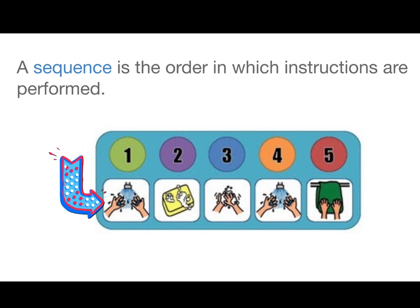This picture shows the sequence we use when we're washing our hands. First, turn the water on and get your hands wet. Then use the soap, lather up, then rinse, then dry your hands. A sequence is all of those commands together.